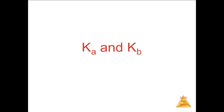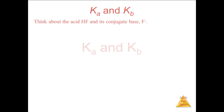Ka and Kb. For any weak acid, we have a conjugate base that is a weak base. A weak acid will react with water to dissociate, and the conjugate base will react with water to hydrolyze. So if the acid has a Ka, the base will have a Kb. Let's look at a specific example of this.